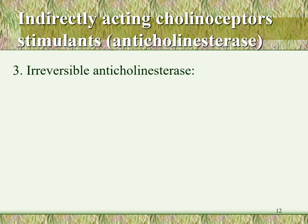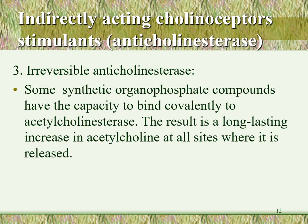The third group are irreversible anticholinesterases. They bind to the enzyme through covalent binding, leading to phosphorylation of the enzyme, rendering the inhibition irreversible. These are organophosphate compounds. The covalent binding cannot be reversed, resulting in a long-lasting increase in acetylcholine at all sites where it is released, due to the prolonged inhibition of cholinesterase.